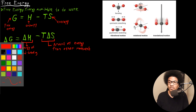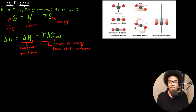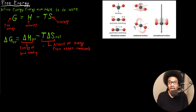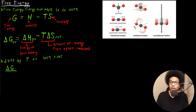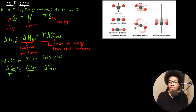Keep in mind, all of these quantities are referring to the system. This is the delta S of the system; this is the enthalpy of the system. So you get the free energy change of the system. How do we relate this to delta S of the universe to relate it to spontaneity? Well, what we can do first is divide by T on both sides to try to isolate delta S of the system. So if we divide by T on both sides, then we get delta G over T is equal to delta H over T minus delta S of the system.